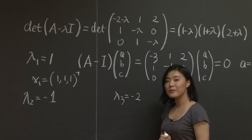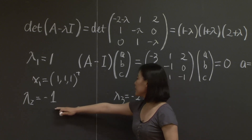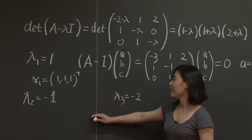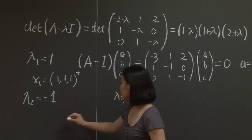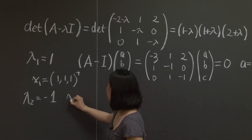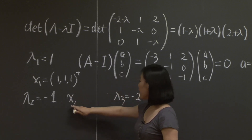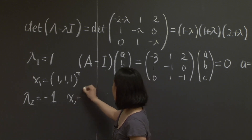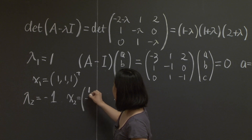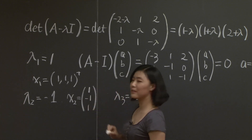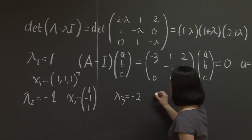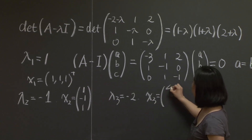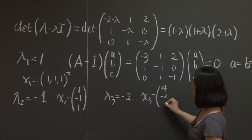You can do the same thing for lambda 2 and lambda 3. The eigenvector x2, corresponding to the second eigenvalue, is [1, −1, 1], and x3 corresponding to the third eigenvalue is [4, −2, 1].